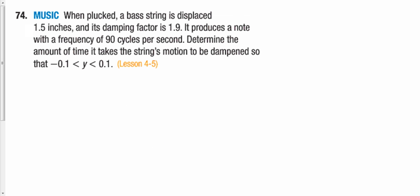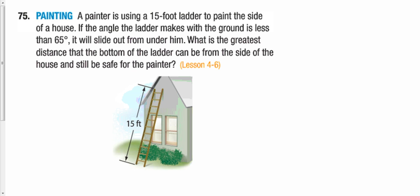There's also a question dealing with the dampening cycle. The formula for that is k·e^(−ct)·cos(ωt), where the e^(−ct) part is the dampening concept. We're probably not going to see one of those on the test, so I don't want to spend too much time on it.